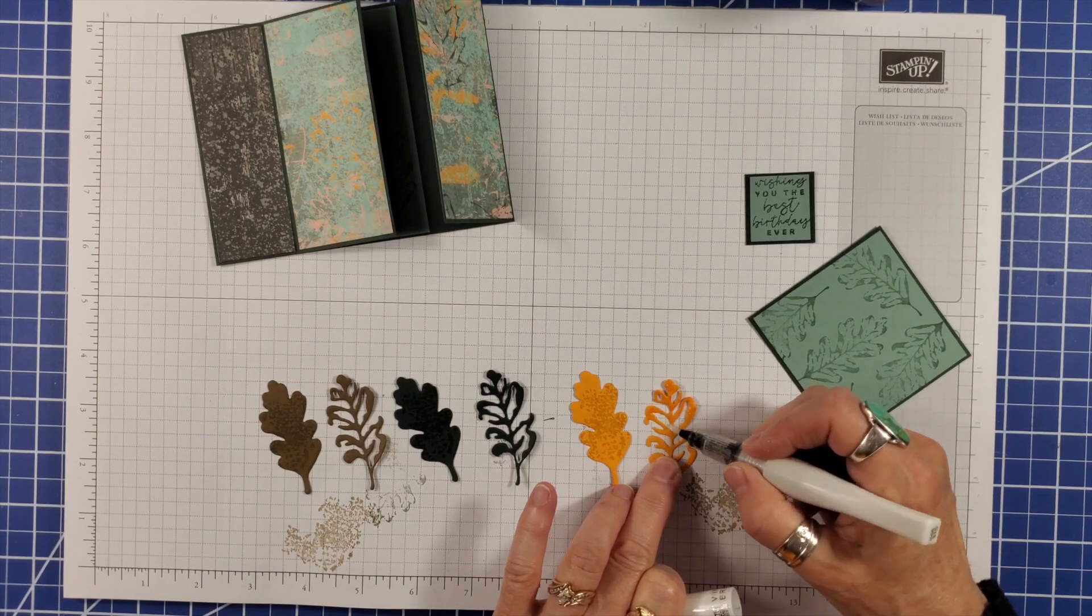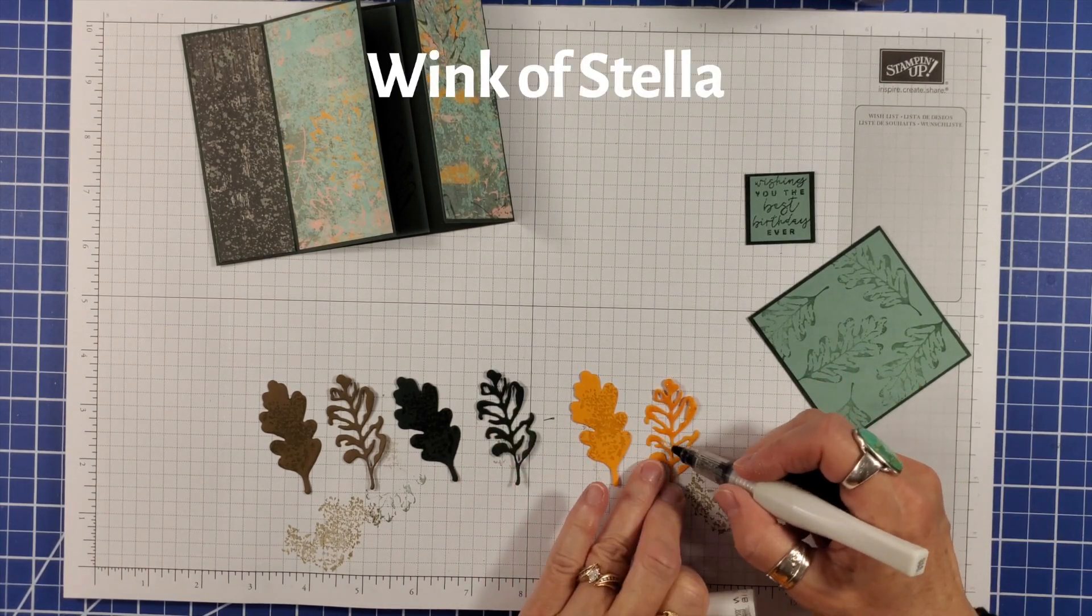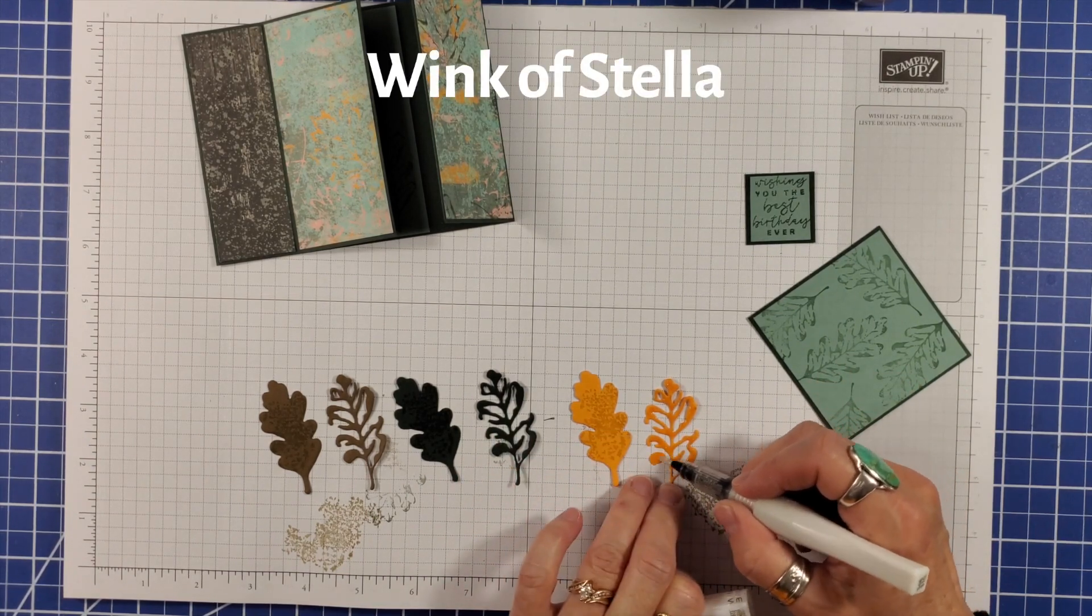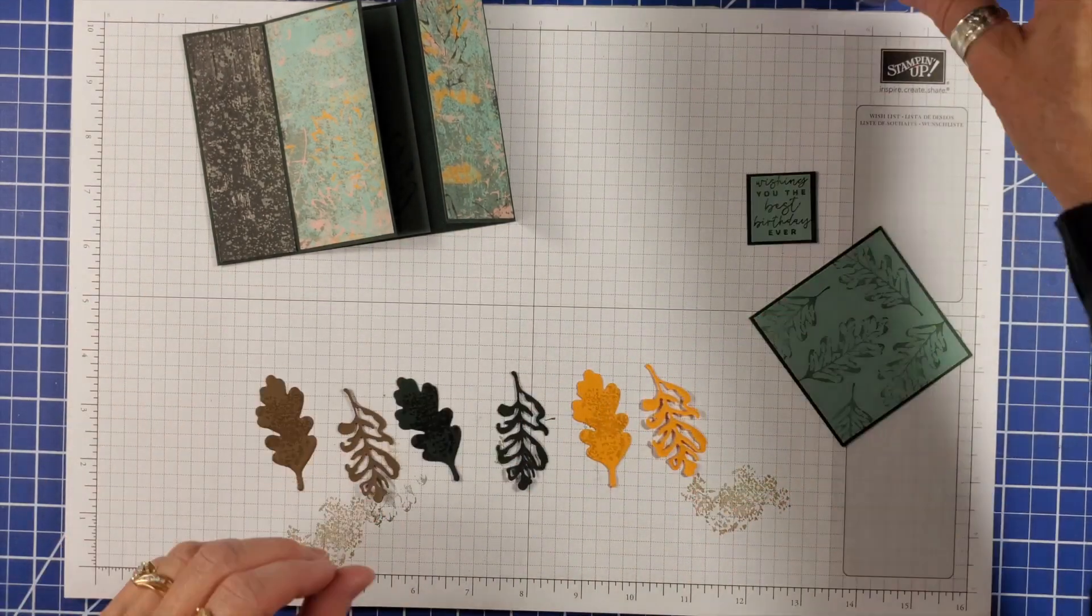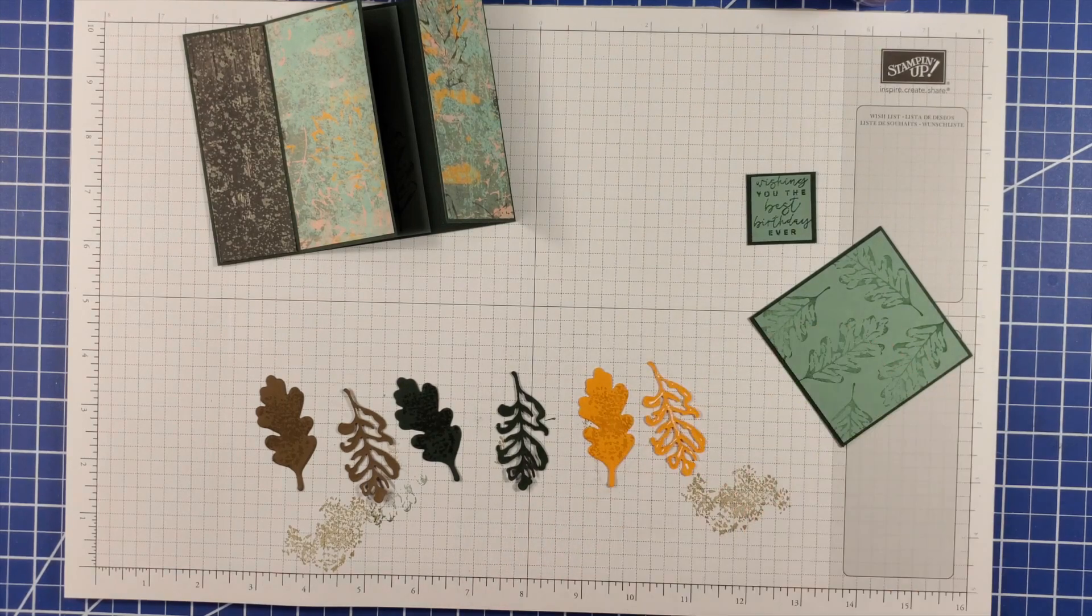Then I covered the matching leaf detail die cuts with Wink of Stella. Dots of liquid glue on the back and the leaves are assembled.